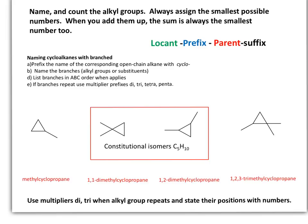When naming monosubstituted cycloalkanes, always place the name of the alkyl substituent in front of the unsubstituted cycloalkane. For example, here we have one methyl group replacing one hydrogen in cyclopropane. Therefore, this is methylcyclopropane.